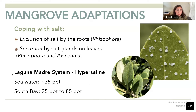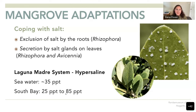A fun fact about Laguna Madre: it is considered one of the most hypersaline bodies of water in the world. Regular sea water has around 35 parts per thousand salinity. South Bay, close to Boca Chica Beach, can have up to 85 parts per thousand or more during the summer. When I was doing research there, I measured the highest at 96 parts per thousand — way more than ocean water.